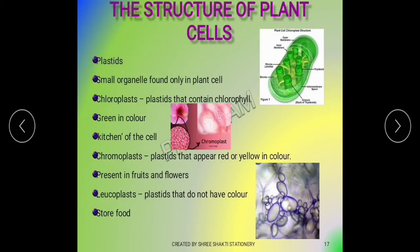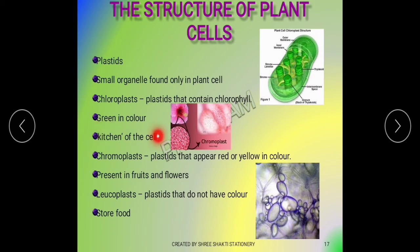Plant cells can have very small organelles. We have chloroplasts that contain chlorophyll. They are green in color, and the chloroplast is called the kitchen of the cell.